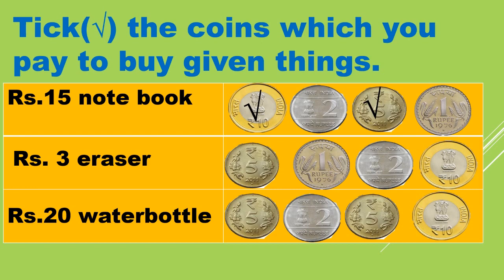The cost of the eraser is Rs. 3, so which coins will you pay? Yes — a 1-rupee coin and a 2-rupee coin. The cost of the water bottle is Rs. 20, so which coins will you pay? Yes — a 5-rupee coin, another 5-rupee coin, and a 10-rupee coin.